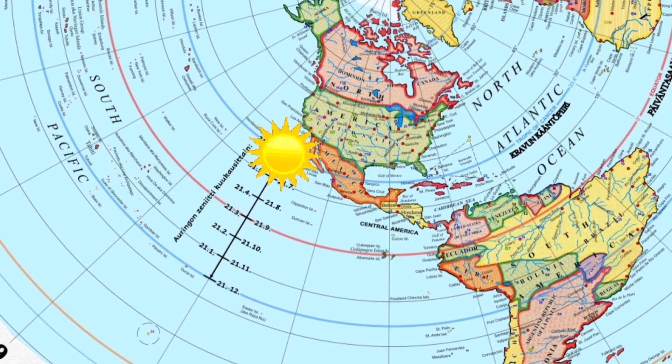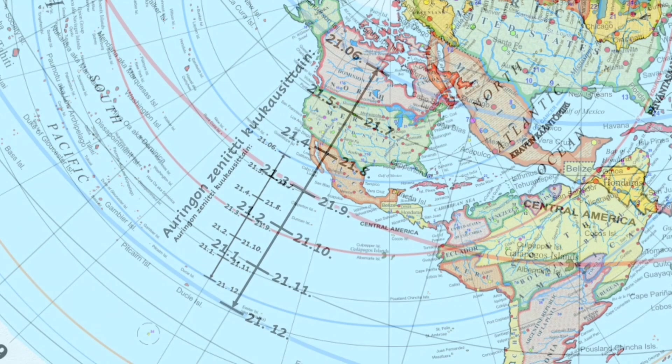On June 21, the sun is at its zenith over Tropic of Cancer. Move the sun to the inner blue circle on the map, i.e. the Tropic of Cancer. In real life the sun's zenith point changes in the north-south direction daily.